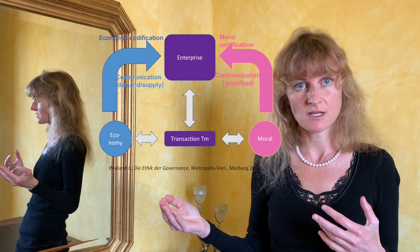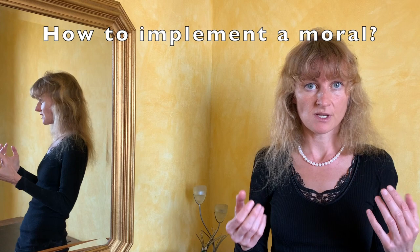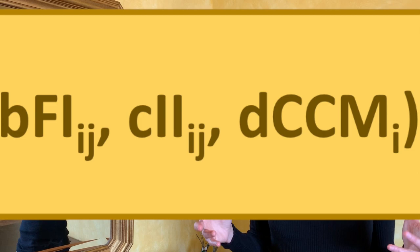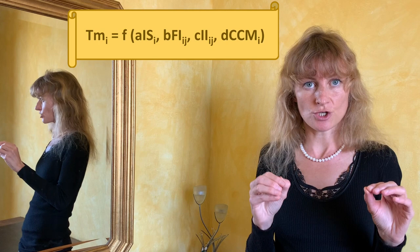What can you do as a company to implement a moral choice? Can the state, institutions and culture of the society help you to lower the cost of implementation? The following equation may help you to understand. Each transaction has its moral dimensions, which is a function of four variables.